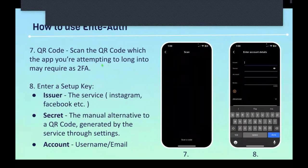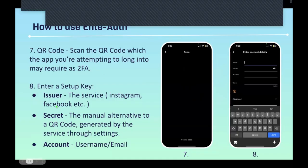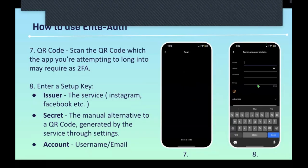Scan the QR code with the app you're attempting to log into, which may require two-factor authentication. You can also enter a setup key manually: the issuer is the service such as Instagram or Facebook you're trying to set up two-factor authentication for; the secret is the manual alternative to the QR code generated by services through settings — basically a backup to your code. Finally, enter your account username or email for that service.